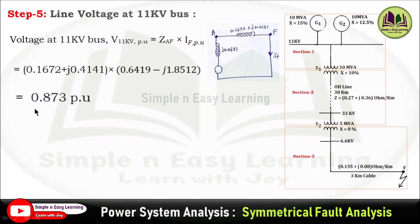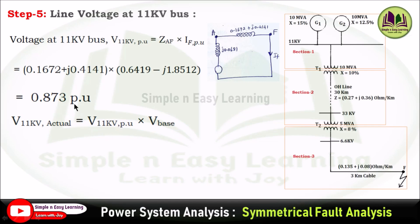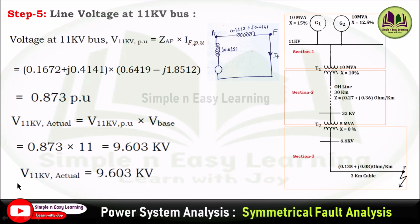Multiplying ZAF = 0.1672 + j0.4141 by the per-unit fault current IF gives a voltage of 0.873 per unit at the 11 kV bus. Converting to actual value: 0.873 × 11 kV = 9.603 kV. Therefore, the line voltage at the 11 kV bus during fault condition is 9.603 kV.